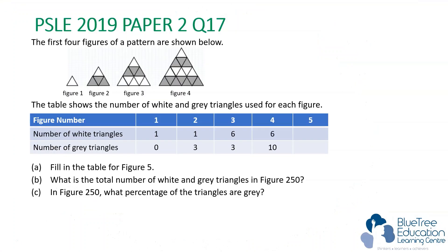The first four figures of a pattern are shown below. The table shows the number of white and gray triangles used for each figure. Part A: fill in the table for figure 5. Part B: what is the total number of white and gray triangles in figure 250? Part C: in figure 250, what percentage of the triangles are gray?